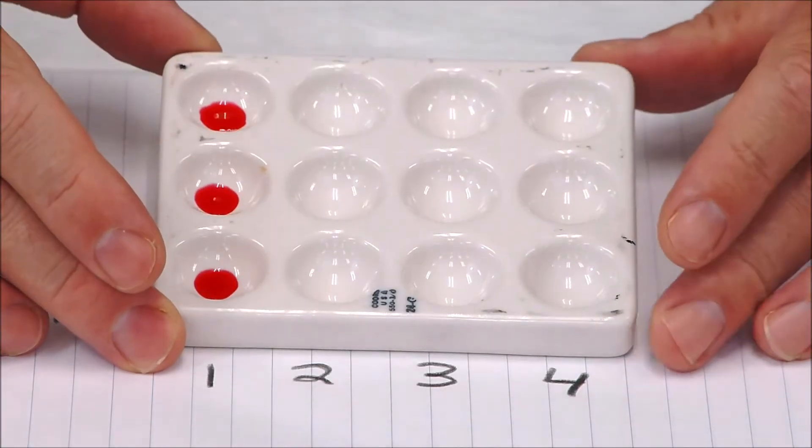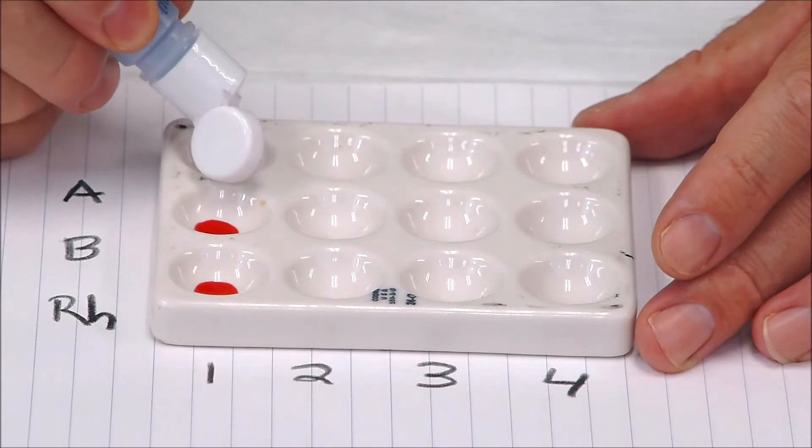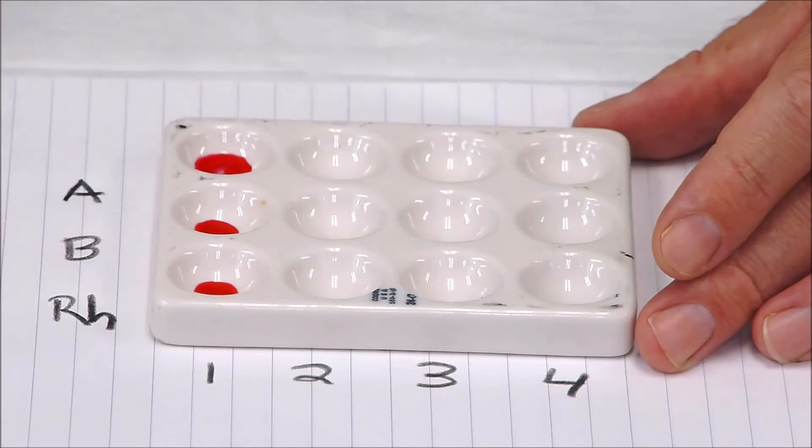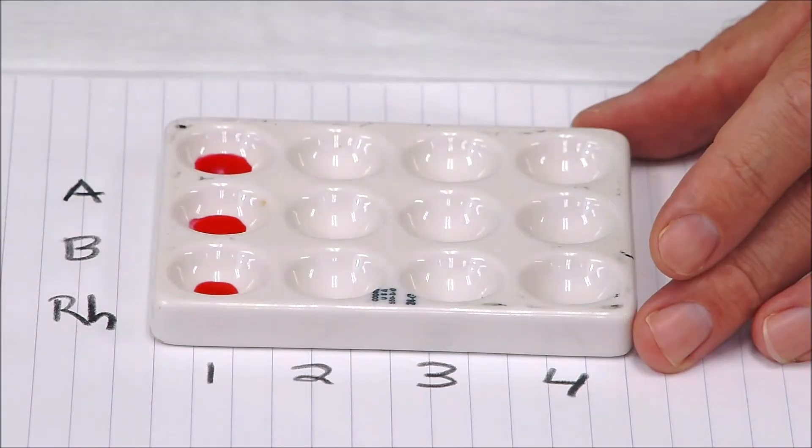You can see the blood analog is sitting in there. Now to the first well, I'm going to add anti-serum A—this is essentially adding an antibody to it, so one drop is enough. Then to the B, I'm going to add B, and to the Rh, I'm going to add the anti-Rh or anti-D.